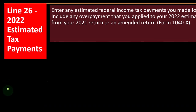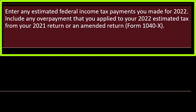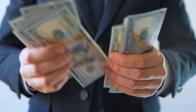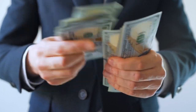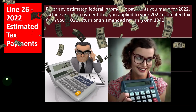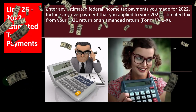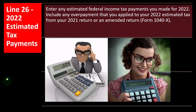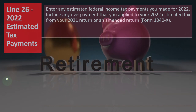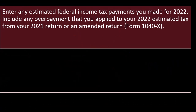Line 26 — 2022 estimated tax payments. The two major ways to pay the IRS are: withholdings, where an employer withholds money and gives it to the IRS on your behalf before you even receive it; and estimated payments made typically on a quarterly basis. Estimated payments are most common when you have a Schedule C business, or secondarily when you're retired and making estimated payments for retirement income instead of having withholdings on a 1099-R. Enter any estimated federal income tax payments you made for 2022, including any overpayment applied to your 2022 estimated tax from your 2021 return or an amended return.